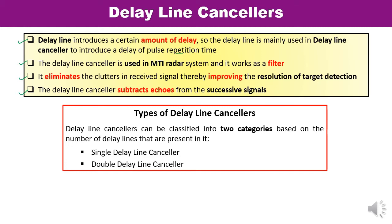When talking about the types of delay line cancelers, they are classified into two categories based on the number of delay lines present. First is the single delay line canceler, where one delay element is used. Second is the double delay line canceler, where two delay elements are used.